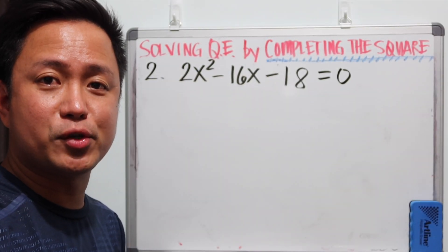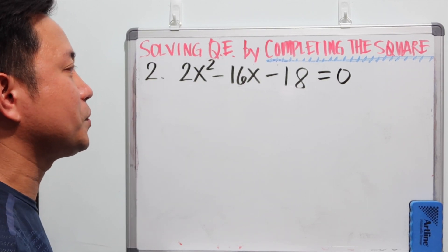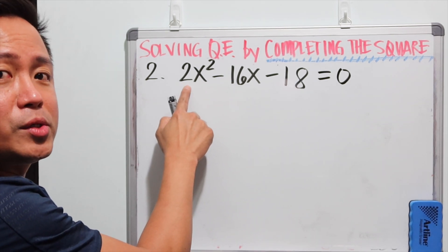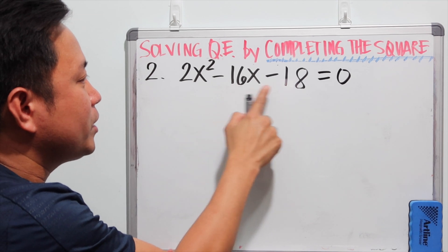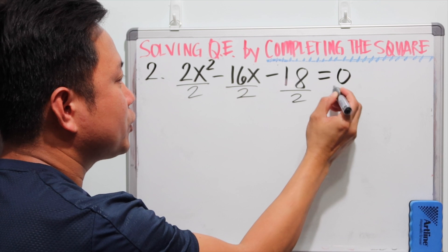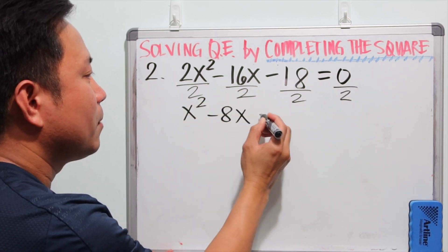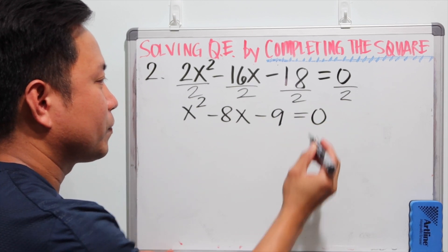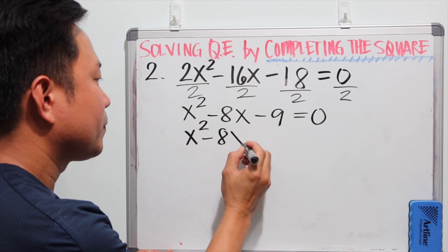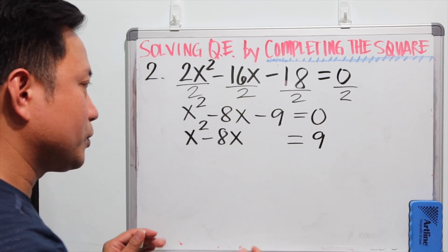Now let's take a look at example number 2: 2x squared minus 16x minus 18 is equal to 0. In this problem there is an a value of 2, so the first thing we need to do is divide every term by 2. When you divide each term by 2, this becomes x squared minus 8x minus 9 is equal to 0. Next, we need to isolate the variables on the left side, which means we transfer negative 9 to the right, and that turns to positive 9.